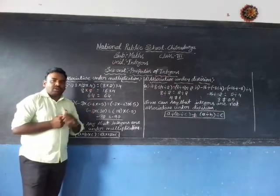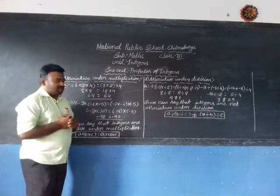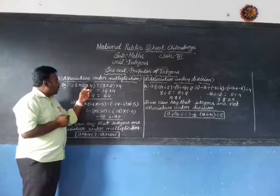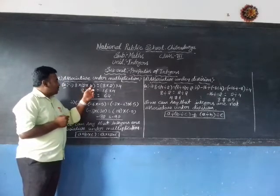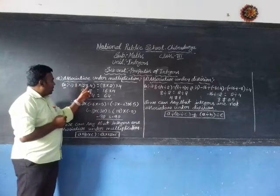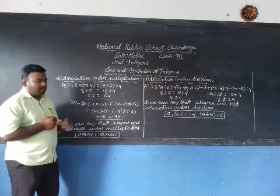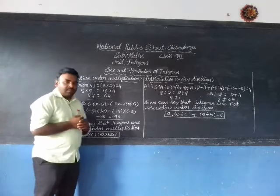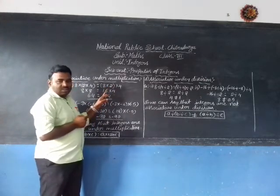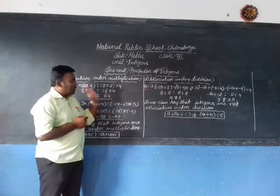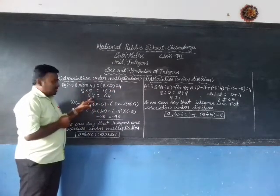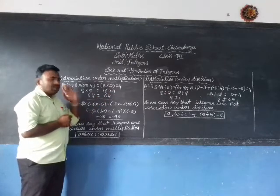First, we carry out the brackets. In the left hand side bracket, 2 × 4 = 8, so 8 × 8 = 64. On the right hand side, in the bracket, 8 × 2 = 16, and 16 × 4 = 64. So 64 = 64.